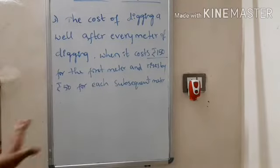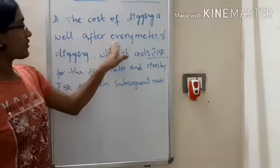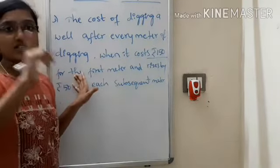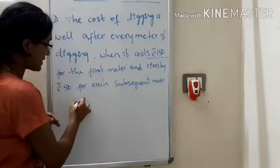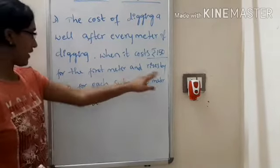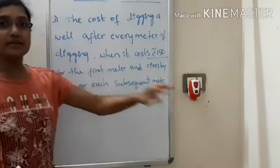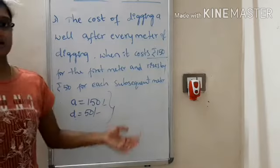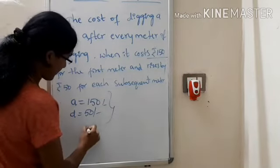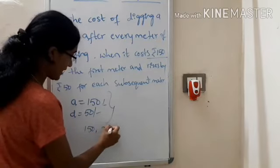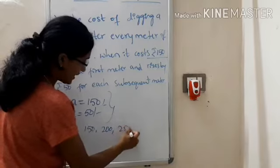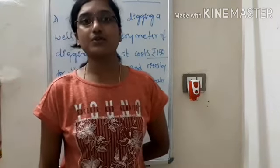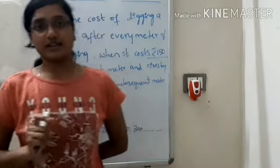Problem: The cost of digging a well after every meter of digging, when it costs 150 rupees for the first meter and rises by 50 rupees for each subsequent meter. So a equals 150 and d equals 50. The pattern: 150, then 200, then 250, and so on — this is an arithmetic progression. For the next session, we will learn how to find the nth term of a given arithmetic progression.